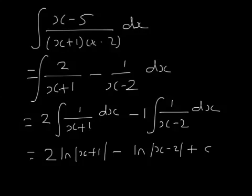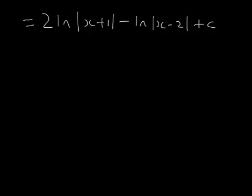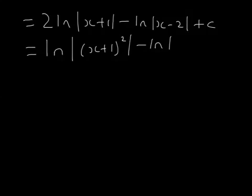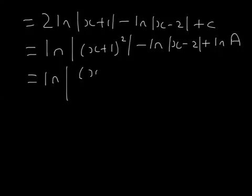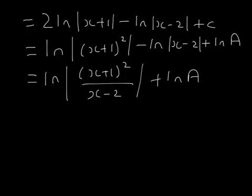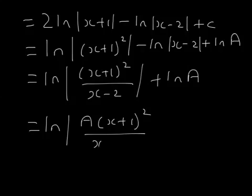This can be tidied up. I've written it out again. That 2 can come in as a power. I'm going to write c as the natural log of a, because the natural log of a is also a constant. Why am I doing that? You'll see in a minute. Now what we've got here is ln minus a ln, so that's ln of (x plus 1) squared over (x minus 2) plus ln a. Now I've got a ln plus a ln, so we can multiply those together. So it's ln of a times (x plus 1) squared over (x minus 2). So the constant of integration is now inside the ln.